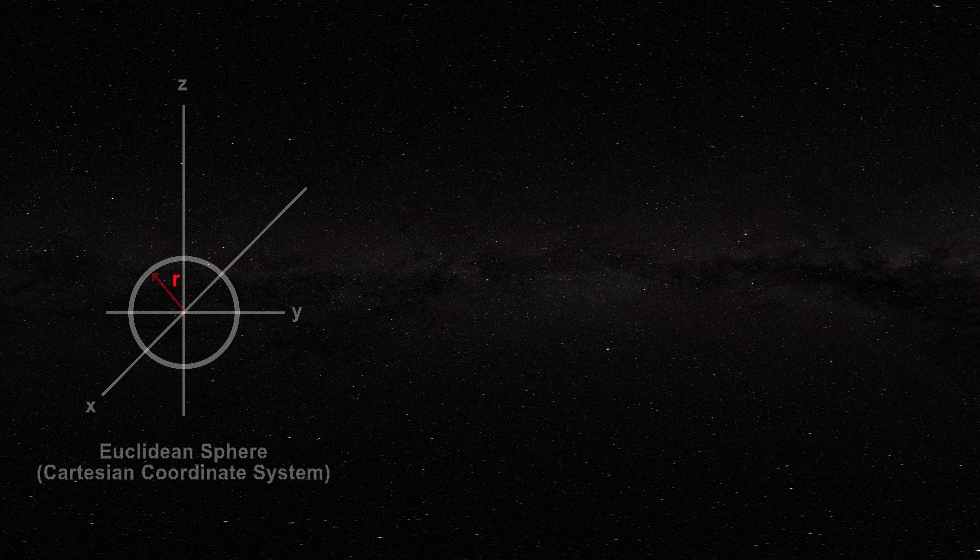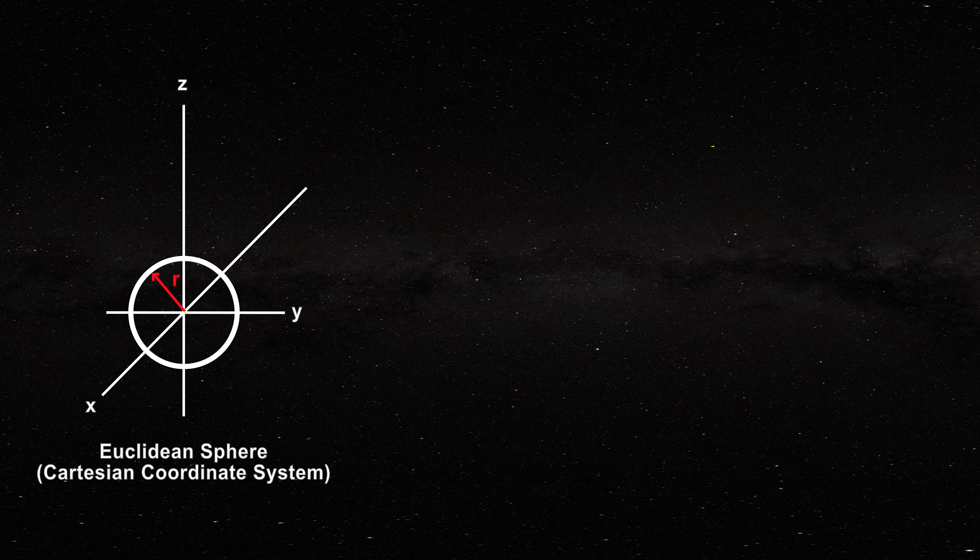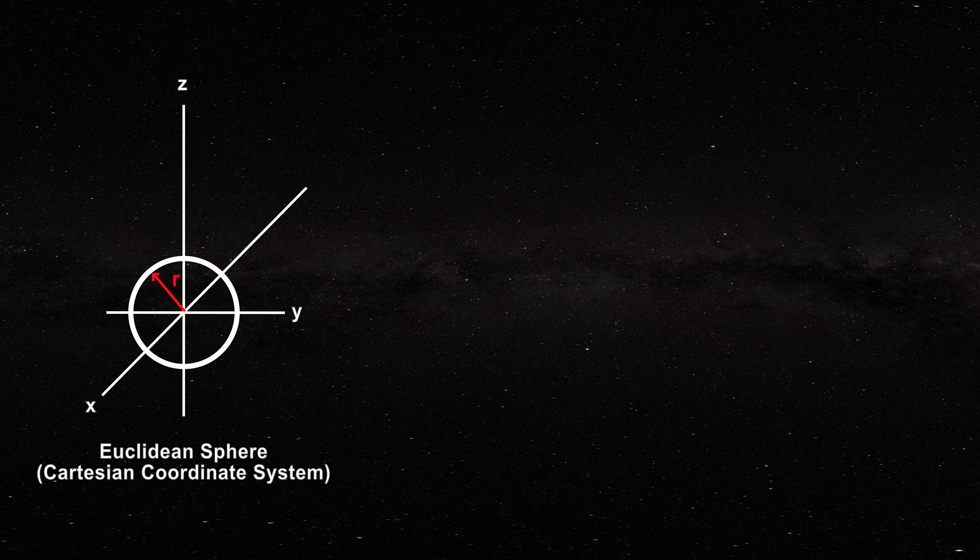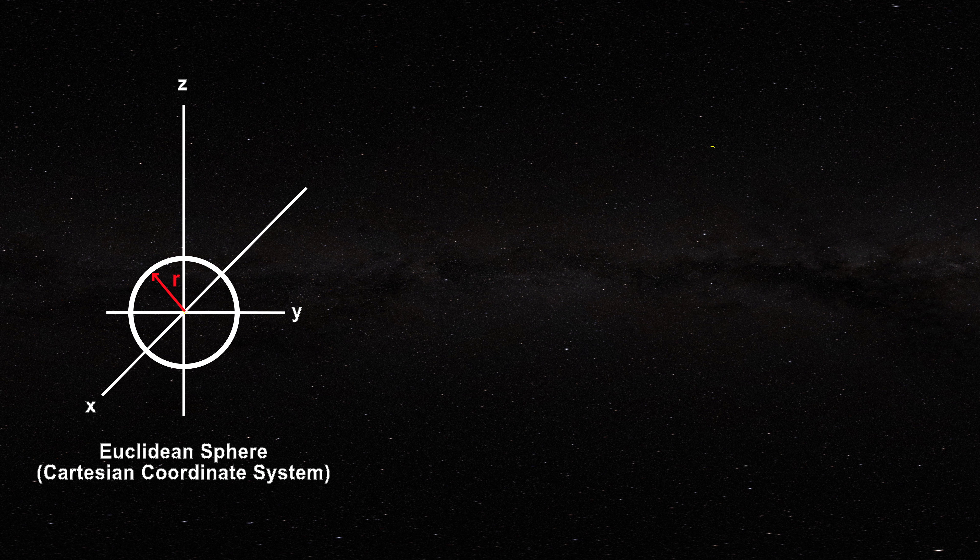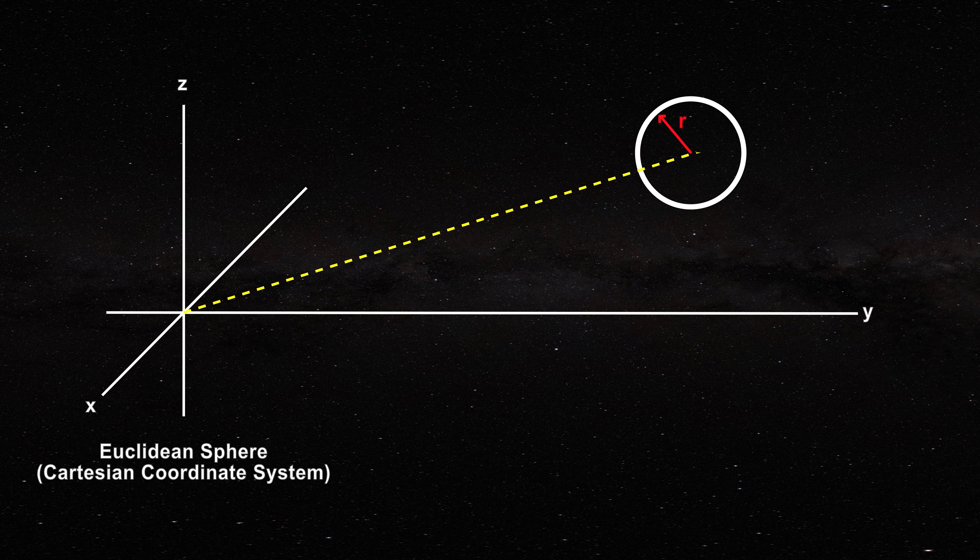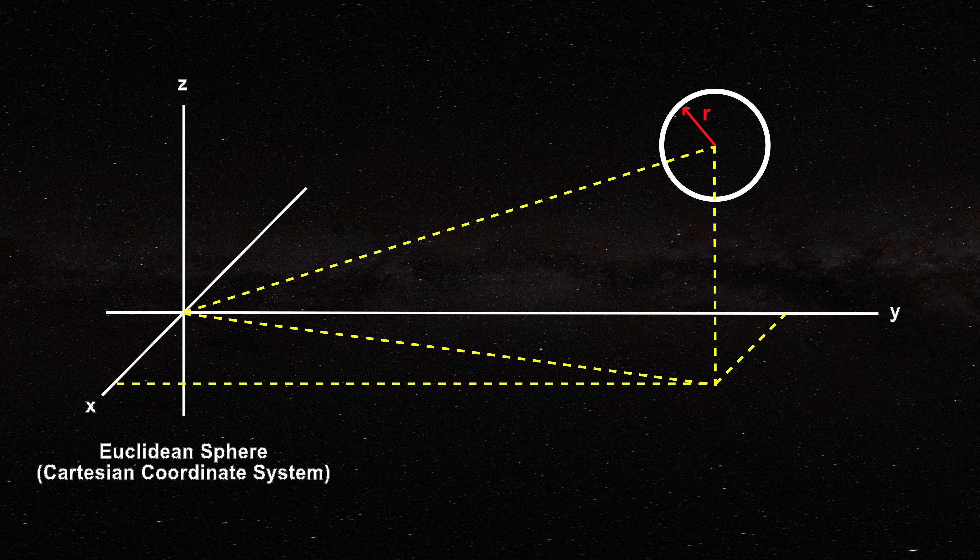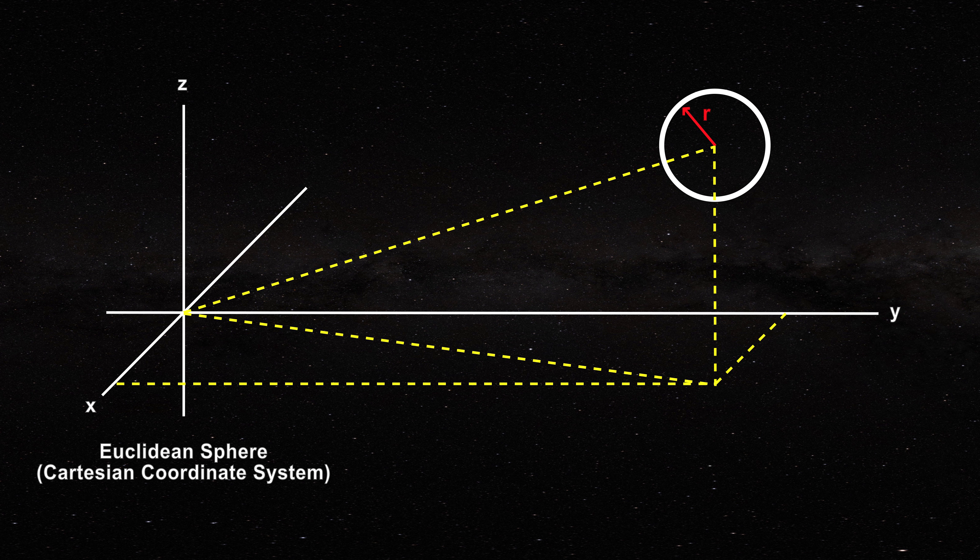Consider a sphere centered at the origin of a Cartesian coordinate system as seen in this figure. If this sphere is moved to some other place in the coordinate system, the center will also move. The geometry of the sphere is not altered by the translation.